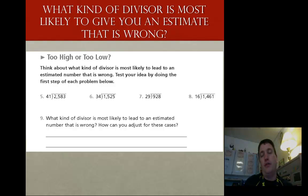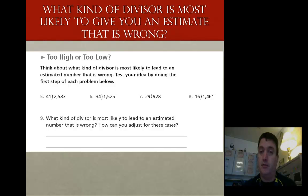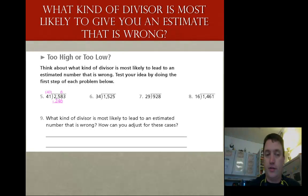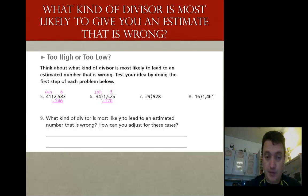Now let's take a look at what type of divisor is most likely to give you an estimate that's wrong. When am I going to know I might get the wrong estimate? Think about what kind of divisor is most likely to lead to an estimated number that's wrong, then test your idea by doing the first step of the problems below — we don't have to solve the whole problem, just the first step. Looking at the first problem, I take my 41 and round it to 40. I do 6 times the original number, I get 246 — nothing wrong with that. Next one: I've got 30. When I look at 30s into 150, I know there's going to be 5 of them. But when I go to multiply, I get 170 — that's a problem. If it's too big, I have to adjust that quotient digit down by 1.